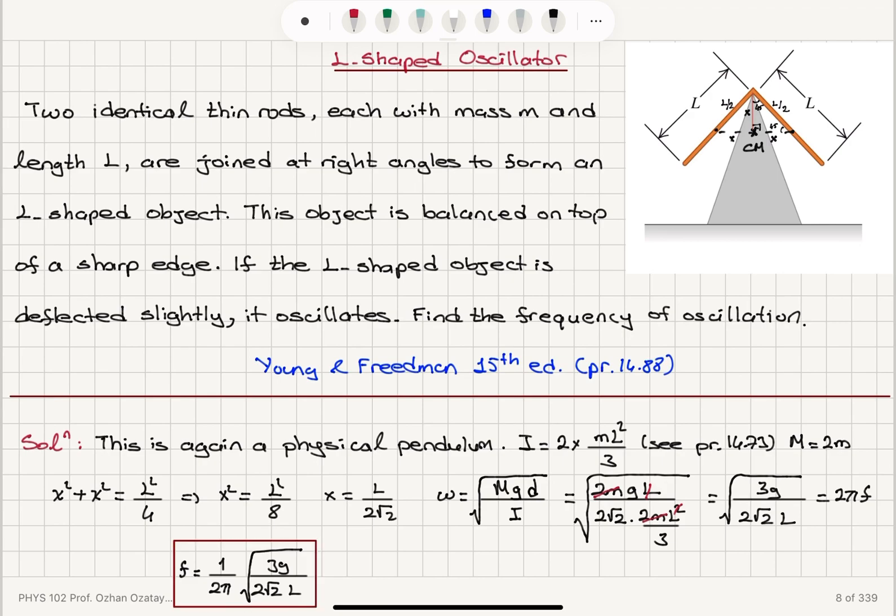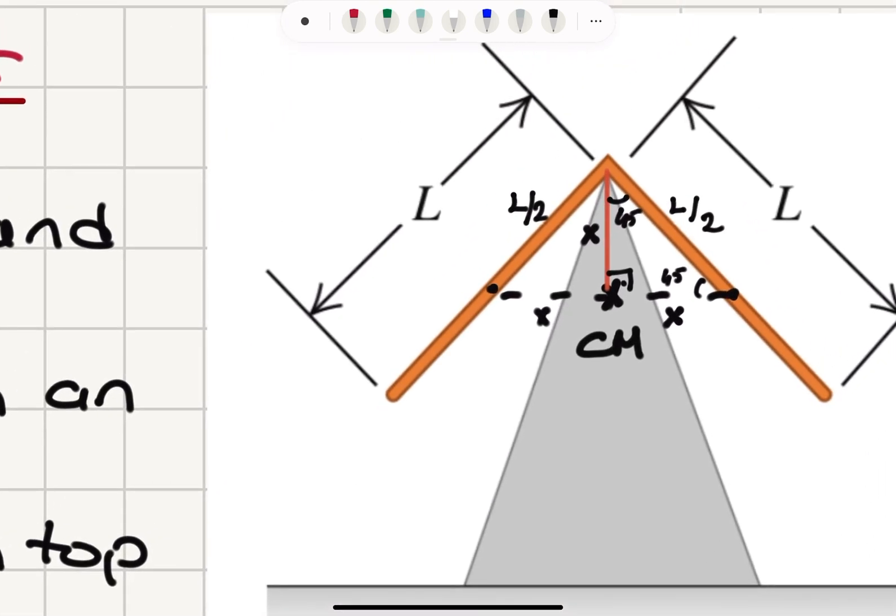Okay, this is yet another application of a physical pendulum. Now the physical pendulum consists of two identical rods, length L, mass M each. So this has mass M, this has mass M. And because they are identical, the center of mass will be right in the middle here, equidistant from the centers of the two rods.